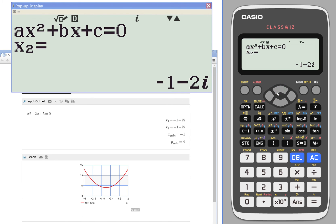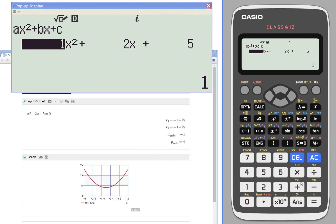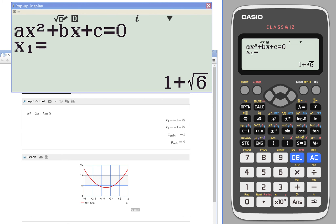We'll change that lead coefficient to negative 1. This will make it open downward. Again, we find that same calculation. This time we find out that it's a maximum.